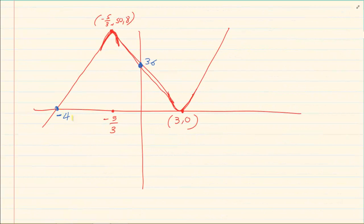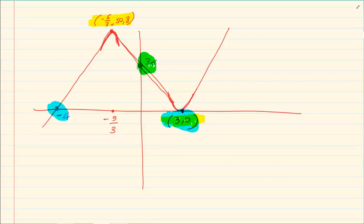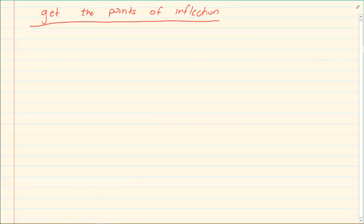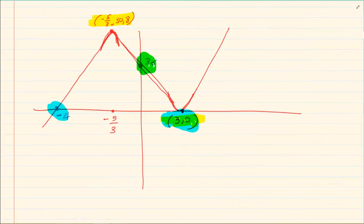Now look at our graph. We did the turning points, then the x intercepts, and the y intercepts. The next question they ask you is: get the points of inflection. Now, what is the points of inflection? The points of inflection is the exact middle point between your two turning points — it is the midpoint of your two turning points.